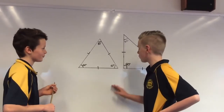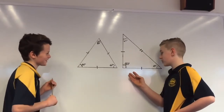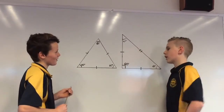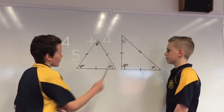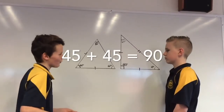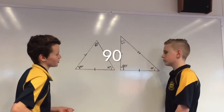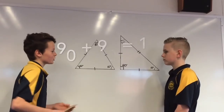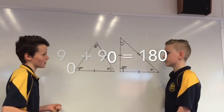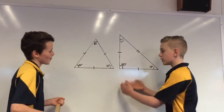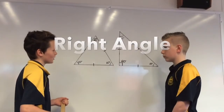Sure about that? Because it's 180 with this triangle. But is it 180 with this triangle? And what's that angle there? That's 45 degrees. 45 plus 45 equals 90 degrees. What's that one? That's 90 degrees — a right angle. So 90 plus 90 equals 180. If that's a right angle, then this must be a right angle triangle.